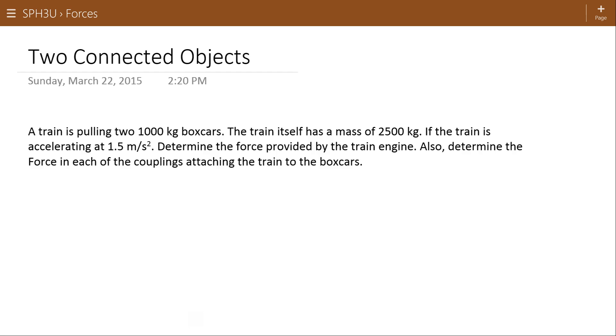So here we go. A train is pulling two boxcars at a thousand kilograms each. Here's one car, here's our coupling hook to the second car, some wheels on it. And the train itself has a mass of 2,500 kilograms. So here it is. This is the engine of the train.